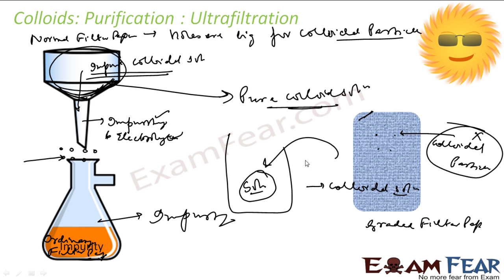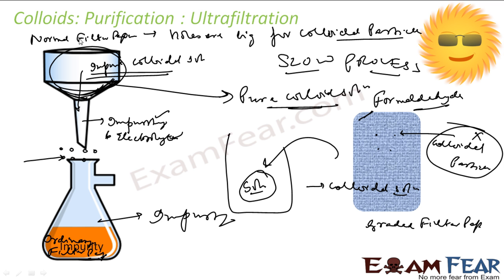The ultra filter paper is prepared by soaking ordinary filter paper in the colloidal solution. Formaldehyde is also used for hardening it, and then it is dried. Ultra filtration is a very slow process. To speed it up, pressure can be applied, which makes the process faster. The pure colloidal solution is collected from above the filter paper, while impurities pass below.